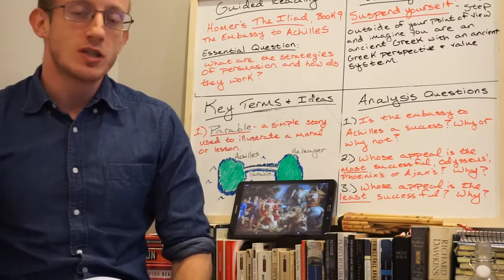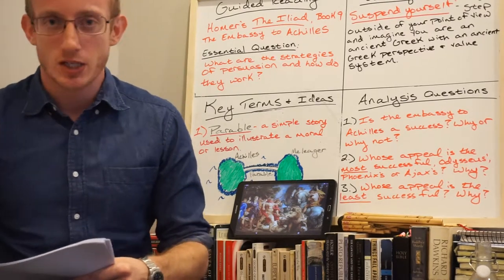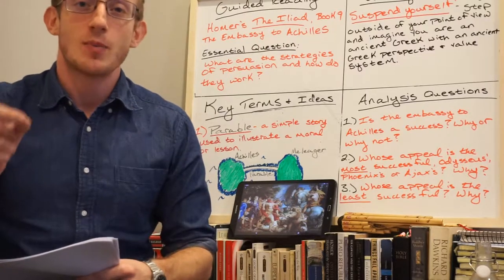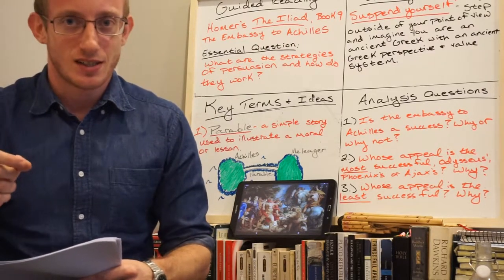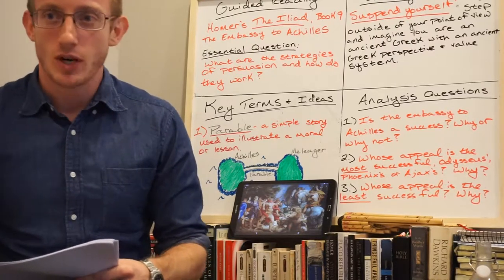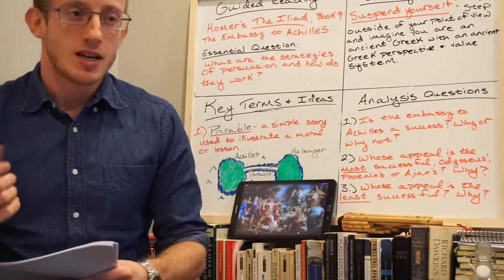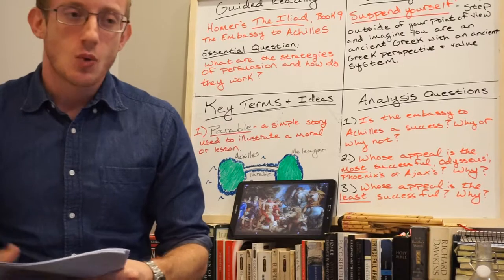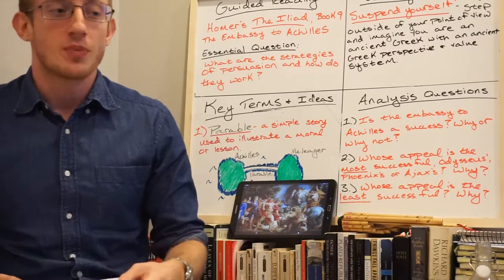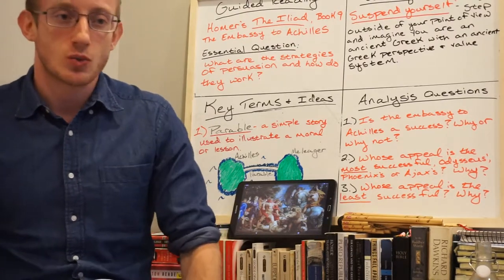Important to continue to think about what are the aspects of persuasion, what are the strategies of persuasion that these different emissary members are going to be using to convince, or in other words to conquer Achilles the Great Warrior and get him back on their side. Think closely about the strategies that each are going to use. We're going to introduce a new key term as we move forward that is going to be introduced through Phoenix's story and then we'll have Ajax's story as well.